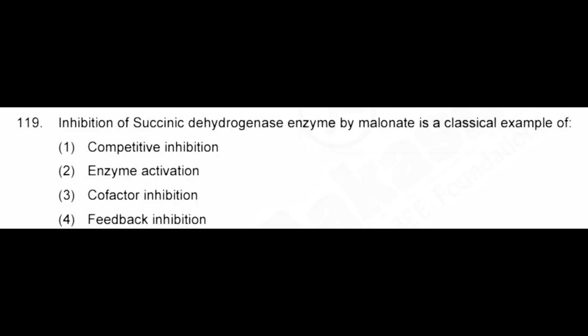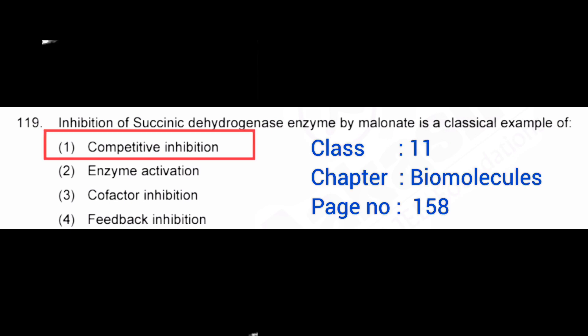Inhibition of succinic dehydrogenase enzyme by malonate is a classical example of — correct answer: option 1, competitive inhibition.